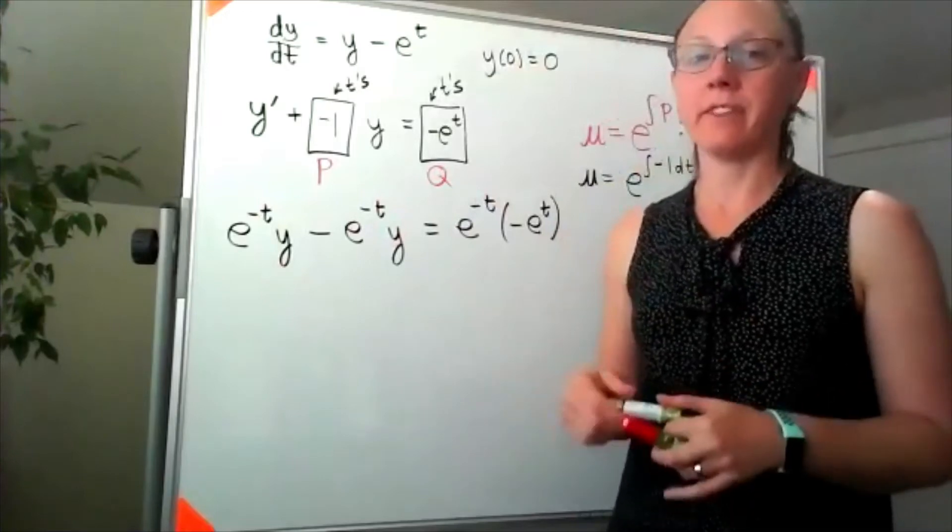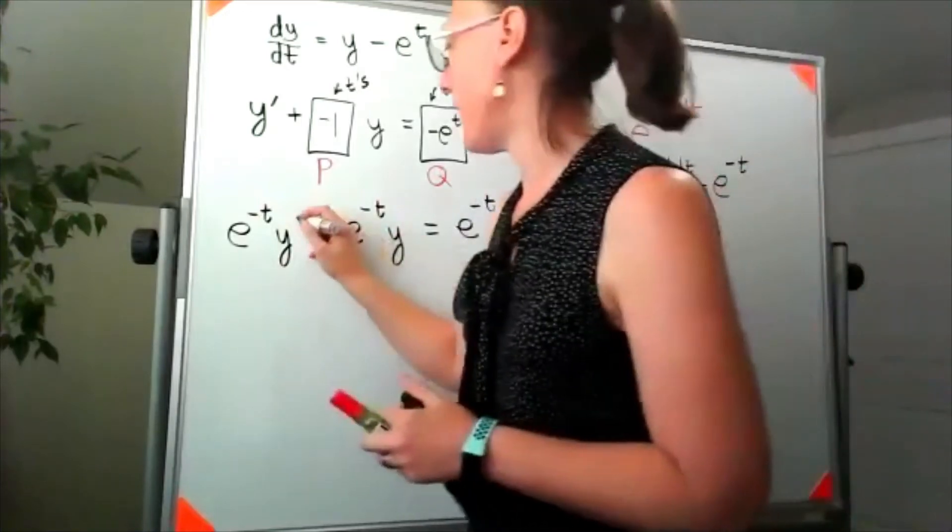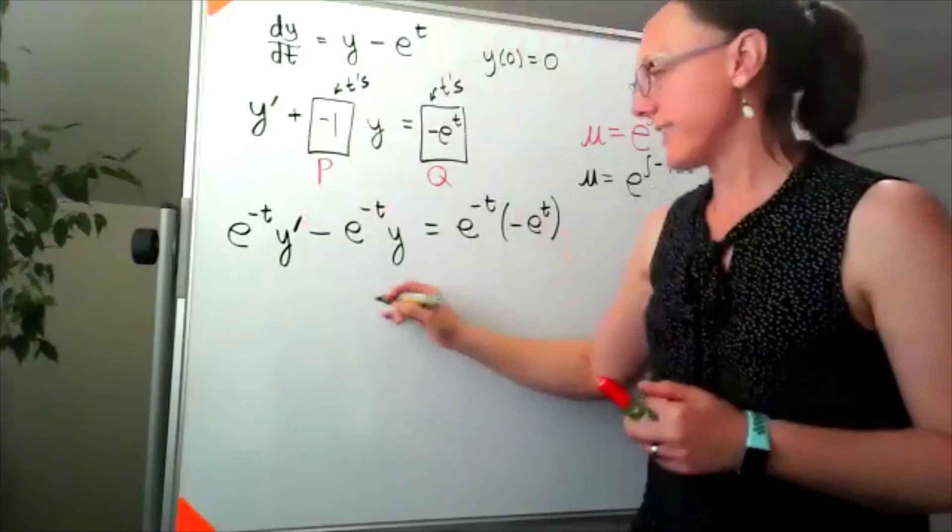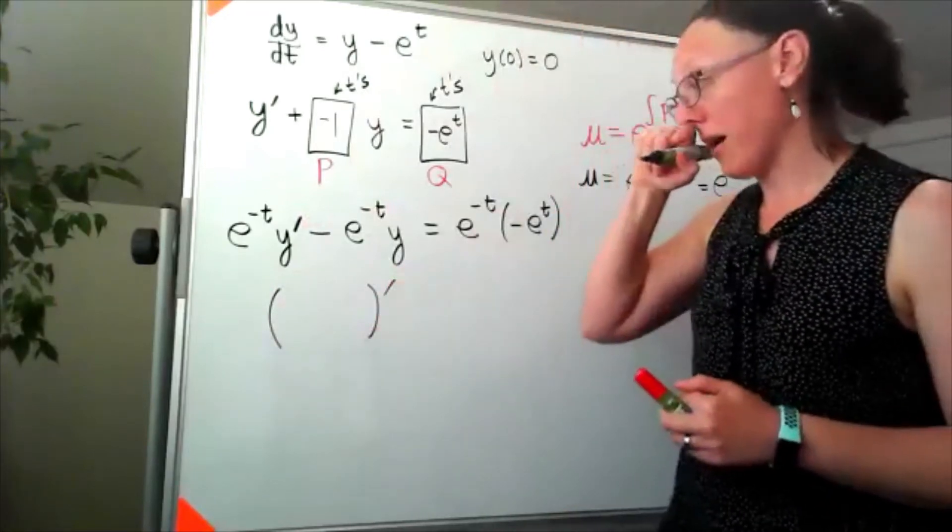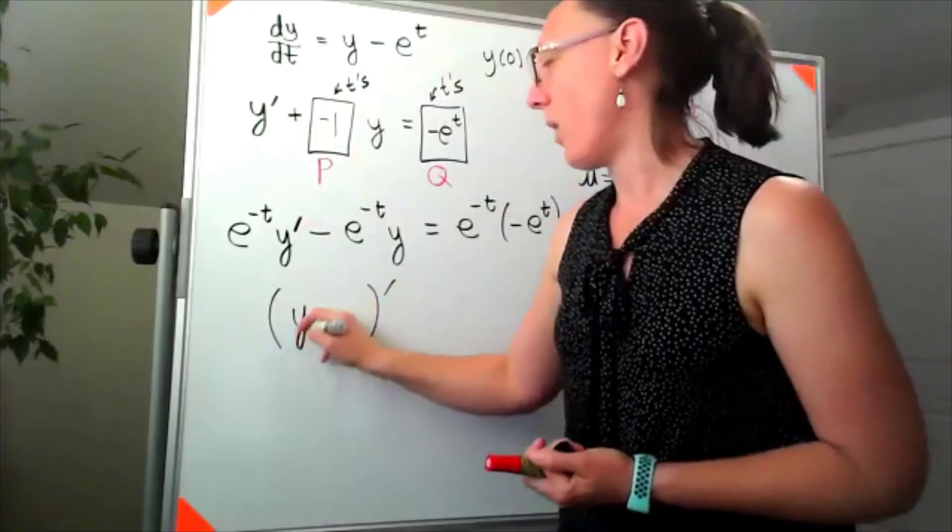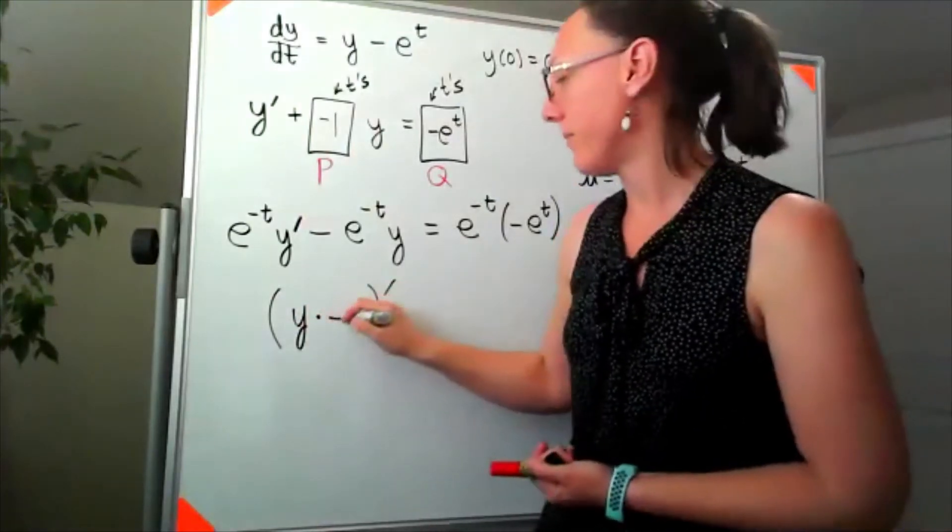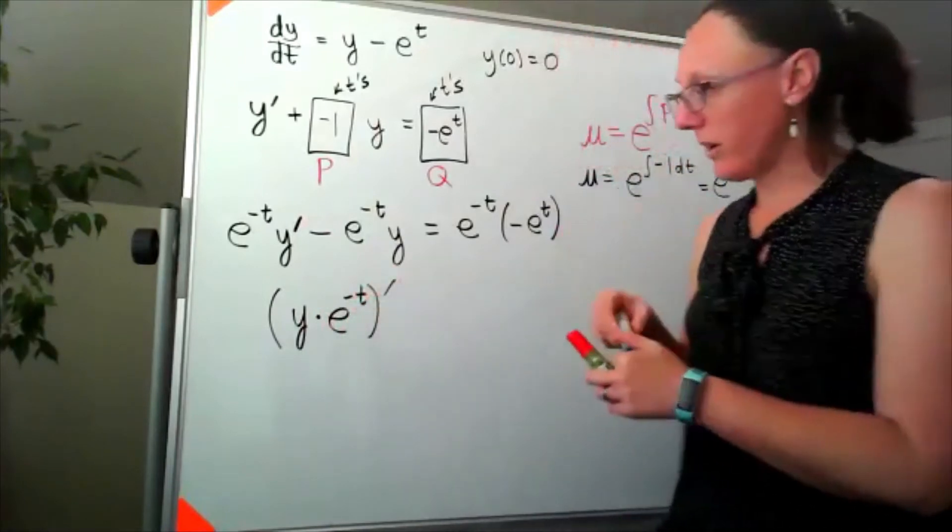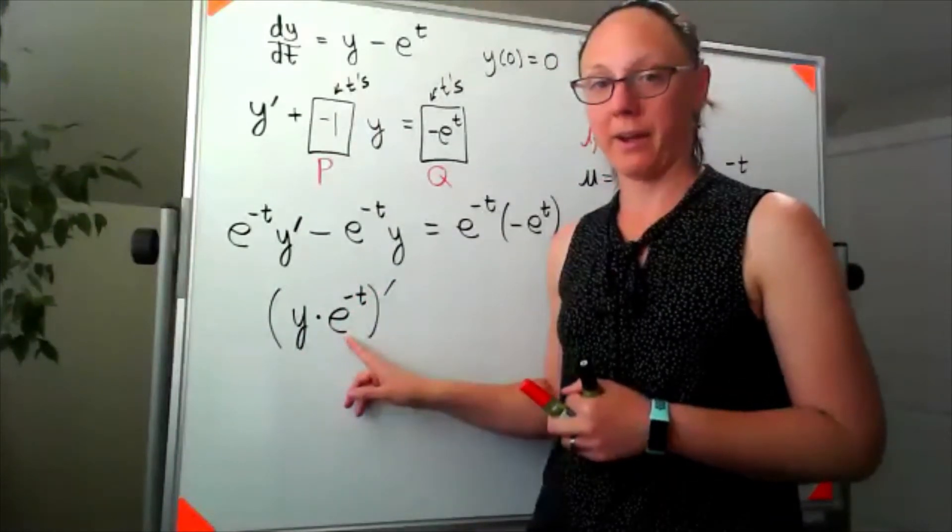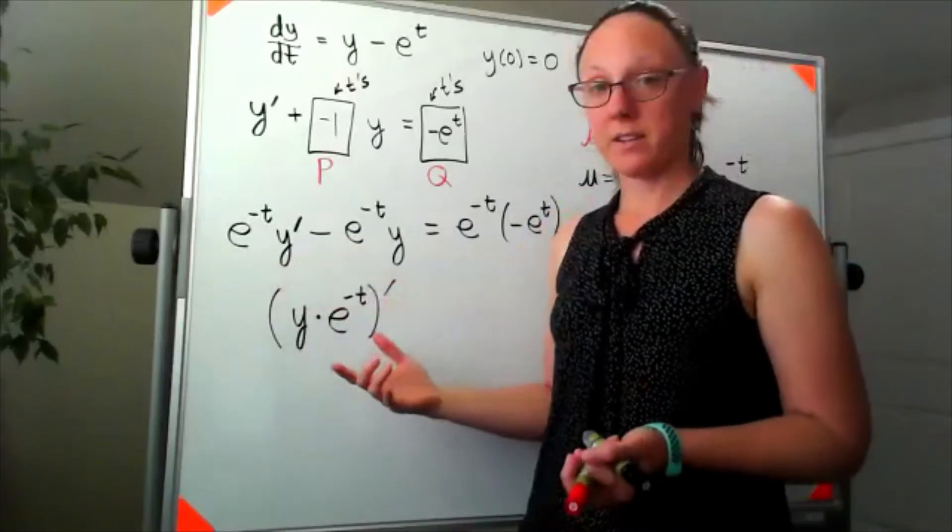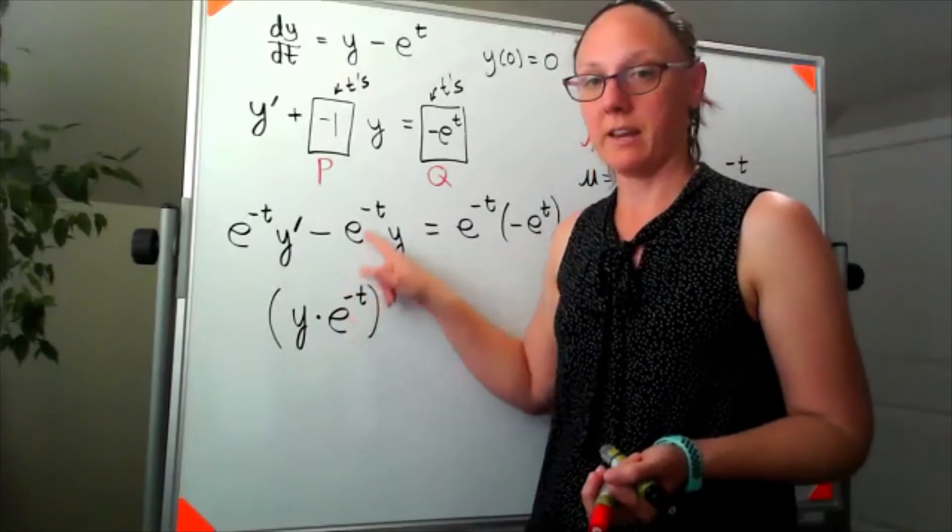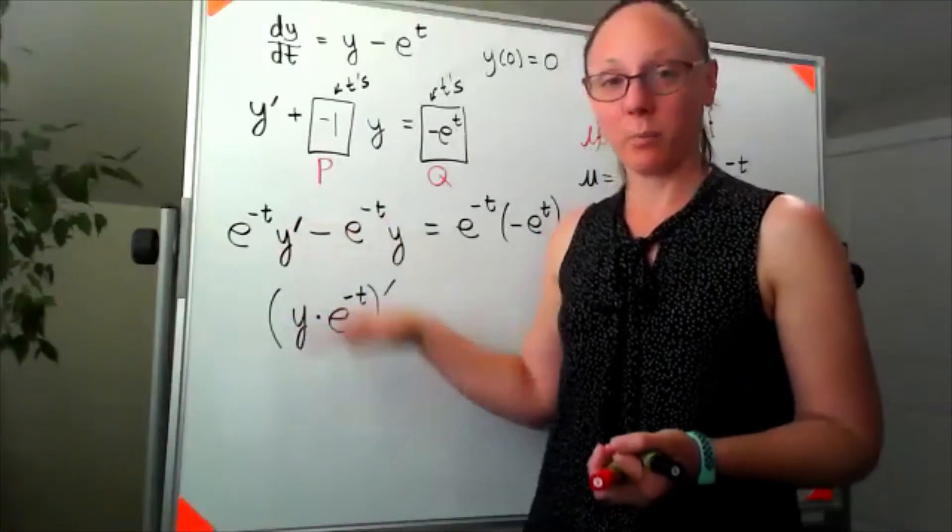On the left hand side over here, if we've done everything correctly, this must be a product rule. So on this side, this should always be a product rule of—well, since it's a product rule, two things multiplied together. The two things should be y and whatever we just found for mu. Well, if we check that really quickly, if I were to apply a product rule here, I'd take the derivative of the y and multiply it by e to the negative t, plus I'd leave the y alone and multiply it by the derivative of e to the negative t, which would be e to the negative t times the negative one. So it works; this matches up with our product rule.